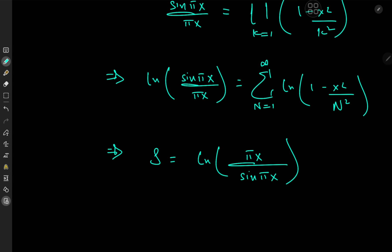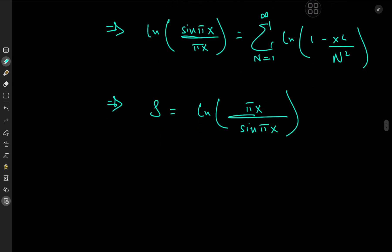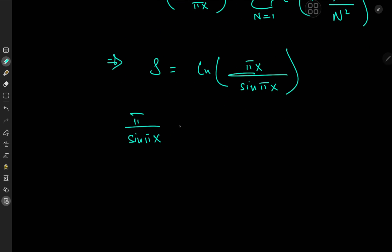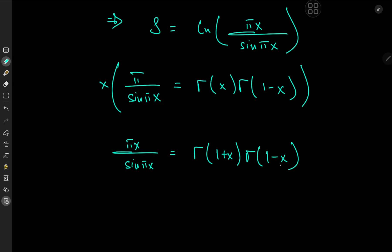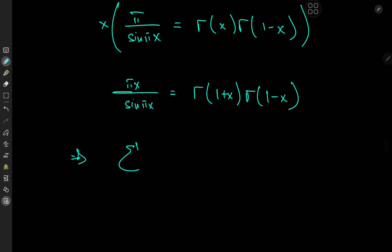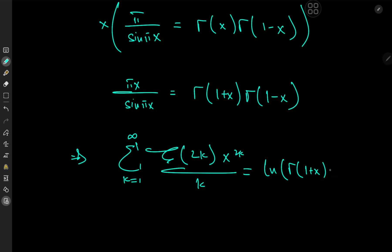So S equals the negative of that logarithm sum, meaning we're left with log(πx / sin(πx)). That's a cool result, but we can go further by invoking the gamma function. Euler's reflection formula states π / sin(πx) = Γ(x)Γ(1−x). Multiplying through by x and using the recursion formula xΓ(x) = Γ(1+x), we get our main result: the sum over k from 1 to infinity of zeta(2k) · x^(2k)/k equals log[Γ(1+x) · Γ(1−x)].